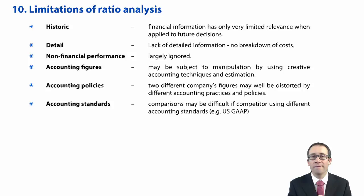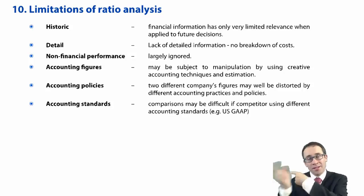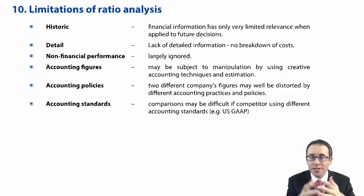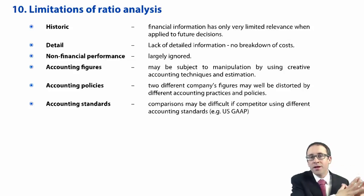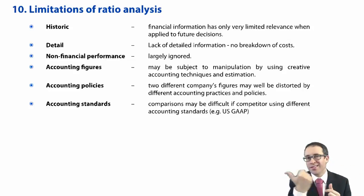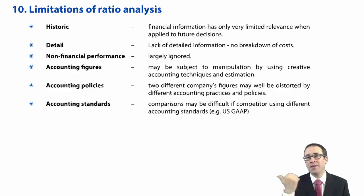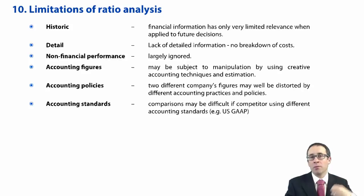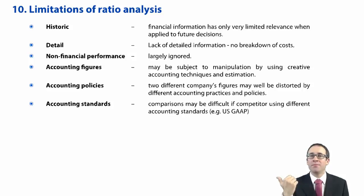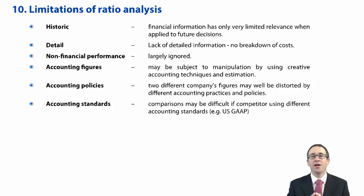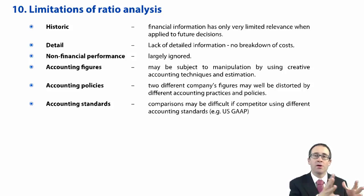The first reason: everything's in the past. You're a management accountant — that's what you're training to be — so you like to look at the future. The problem with financial accounting is that it looks in the past. What's happened in the past is of very little relevance to what's going to happen in the future. We like to look at budgets and cash flow forecasts, as opposed to what's happened in the past. So the first limitation is that it is historic and limits what we think about going forward.